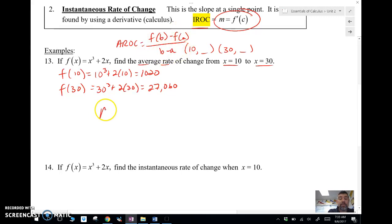So the average rate of change is going to be f of 30 minus f of 10, which is the y values, divided by 30 minus 10.